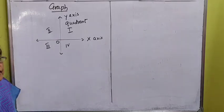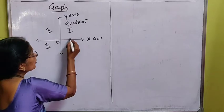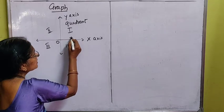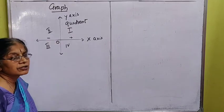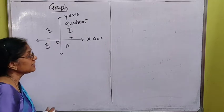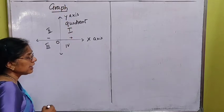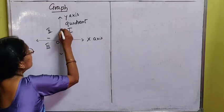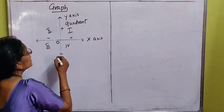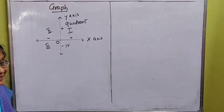Each part is called a quadrant — this is the first quadrant, second quadrant, third quadrant, and fourth quadrant. The x-axis is nothing but a number line, and the y-axis is also a number line. On a number line, we represent numbers: positive numbers on the right-hand side and negative on the left. On the vertical line, upwards is positive and downwards is negative.